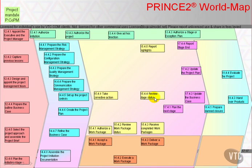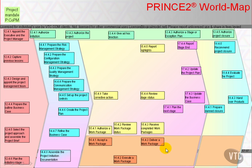When review stage status recognises that there isn't a subsequent stage to follow, we prepare planned closure, hand over the products — which in truth is checking the products delivered have met all their quality criteria, so there may be no formal handover at this stage because they may all have happened earlier — we evaluate the project's performance, and recommend project closure.